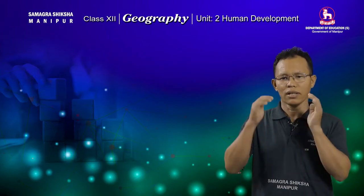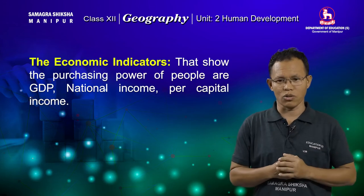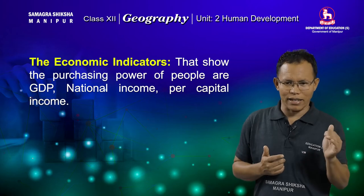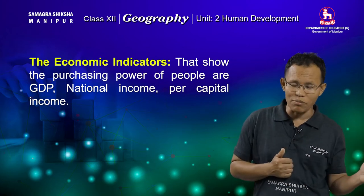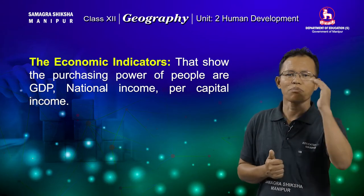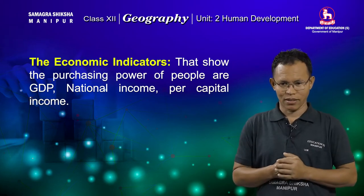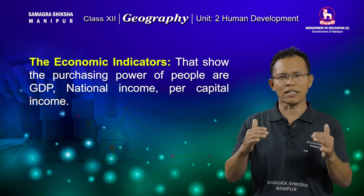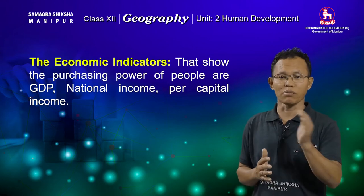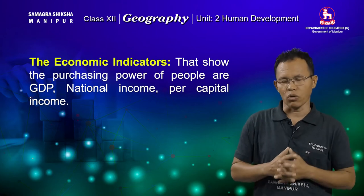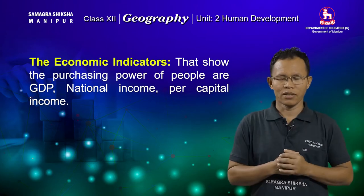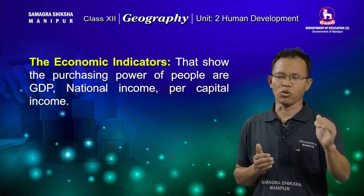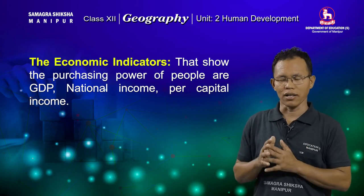The third parameter for measuring human development is income. Income indicates the purchasing power of the people or the country. If the income level of the people increases, their purchasing power also increases, meaning people are enjoying more economic freedom. Human development can be attained in any society only when people enjoy more economic freedom. These are the parameters used to measure human development of the world, of India, and even in our state.